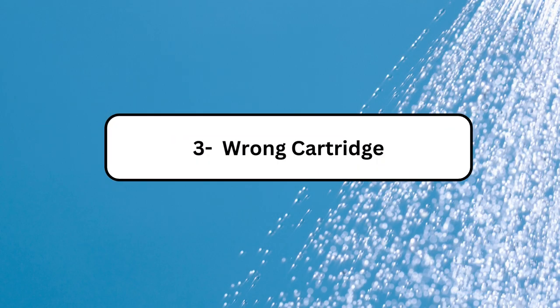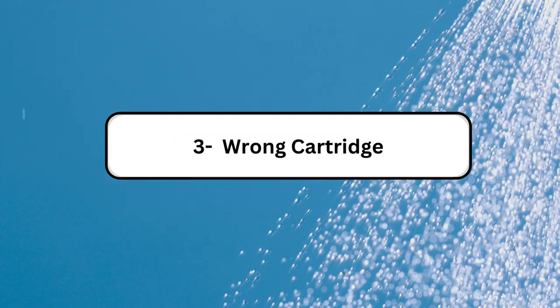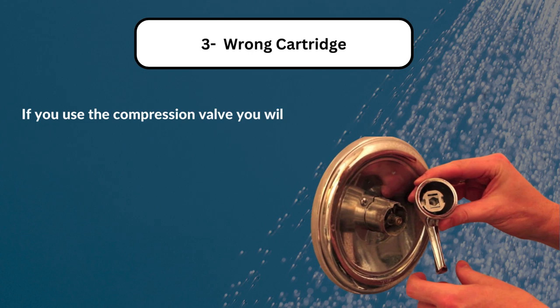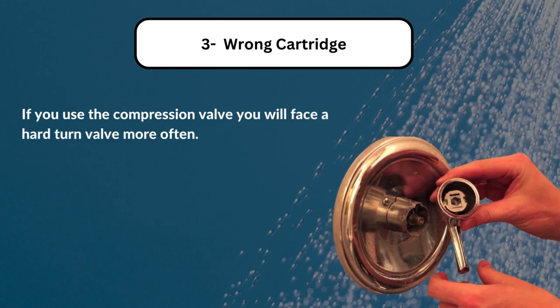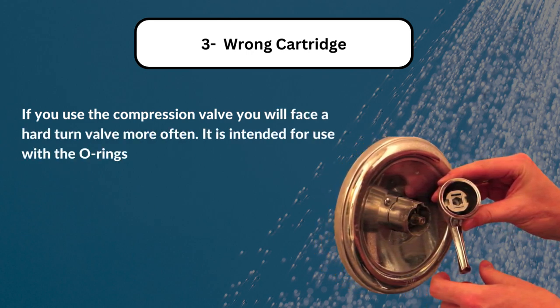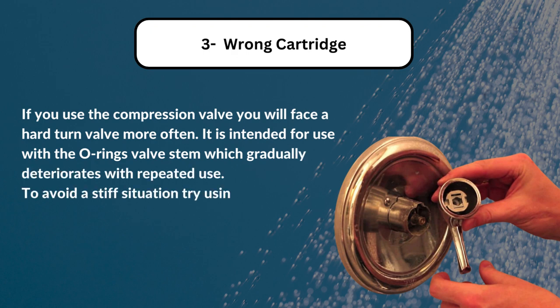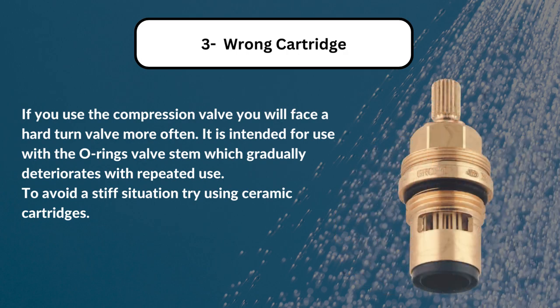Problem 3: Wrong cartridge. If you use the compression valve, you will face a hard-turn valve more often. It is intended for use with the O-ring valve stem, which gradually deteriorates with repeated use. To avoid a stiff situation, try using ceramic cartridges.